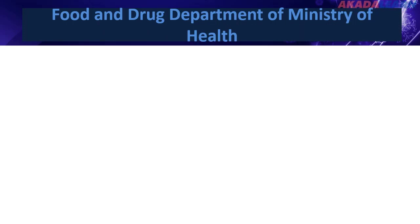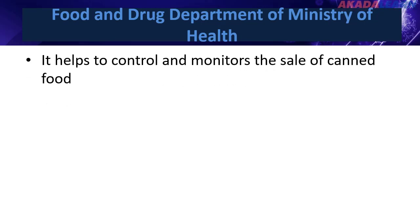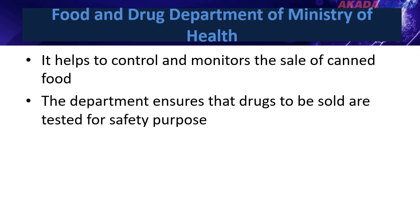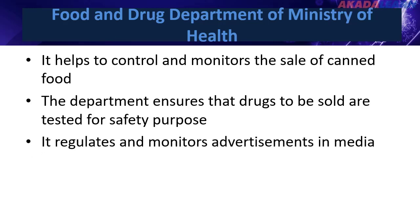The next agency is the Food and Drug Department of the Ministry of Health. The duty of this organization is handled by the National Agency for Food and Drug Administration and Control, popularly called NAFDAC, which is charged with administering the provisions of the food and drugs decree. Its functions include: 1. To control and monitor the sales of canned food. 2. To ensure that drugs to be sold are tested for safety purposes. 3. To regulate and monitor advertisements in the media.